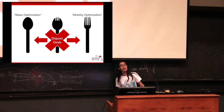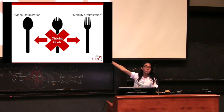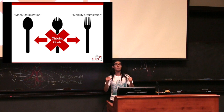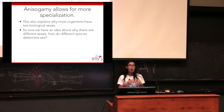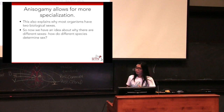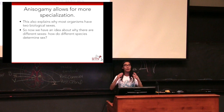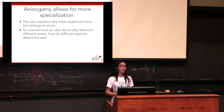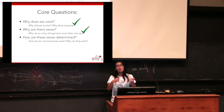By having one gamete be very small and one very large, you can have your fork/sperm and your spoon/egg, which — much like eating dinner — is much more optimal than having two things that are the same. Anisogamy allows for more specialization, and this explains why most organisms have two biological sexes: they're trying to optimize two criteria. If there were four criteria, maybe we'd have a different scenario, but with two major criteria, the easiest way to optimize is to have two different varieties. So now we have some idea about why there are different sexes, and our last question is how do we then determine what sex individuals are?